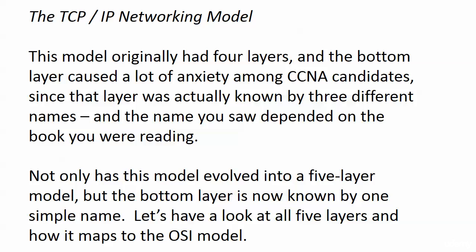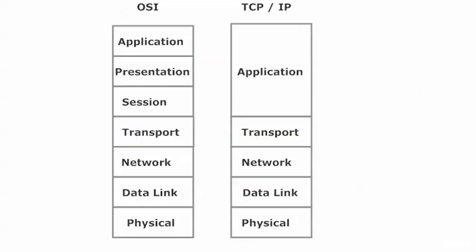Thankfully, this model has not only evolved into a five-layer model, but that bottom layer is now known by one simple name, and it matches the OSI layer exactly. If you are familiar with other versions of the TCP/IP model, this five-layer version is the most recent one.